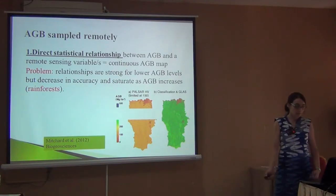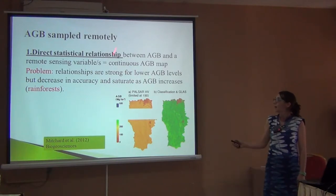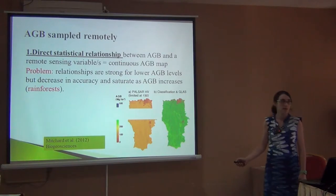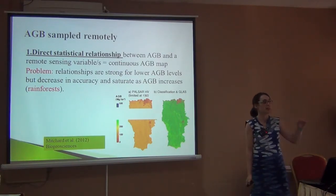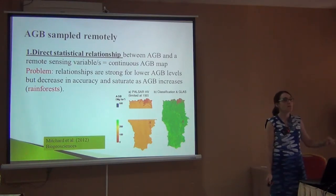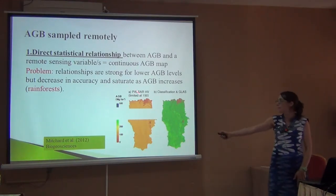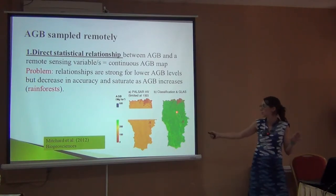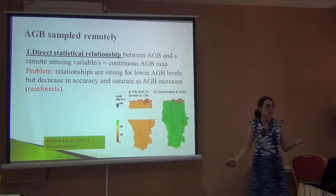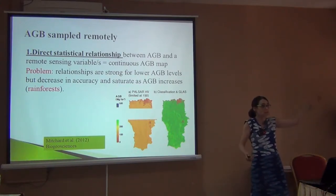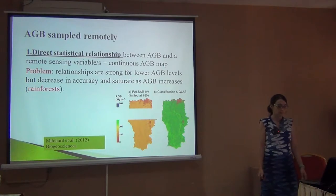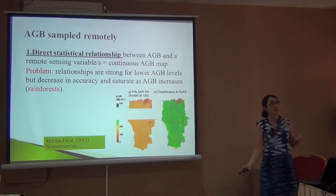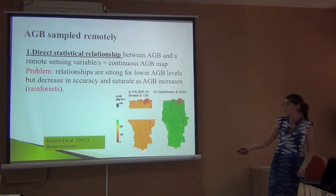The second problem is that some of the relationships we get from remote sensing saturate. It means they're very good for finding the difference in carbon between a grassland and a shrubland, maybe even a savanna. But after a certain point — for example with the NDVI-type index, after about 150–180 — you cannot see the difference anymore. Here you can see it's much greener, there's more carbon, but using this sensor we don't see it because the relationship stops working beyond a certain threshold. So it's good for some environments but bad for tropical rainforest where we have a lot of biomass.